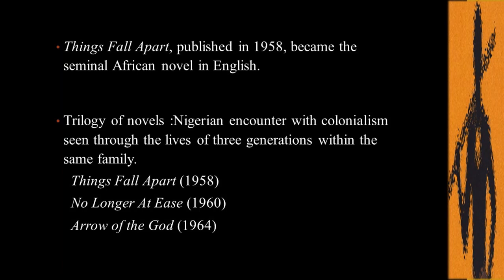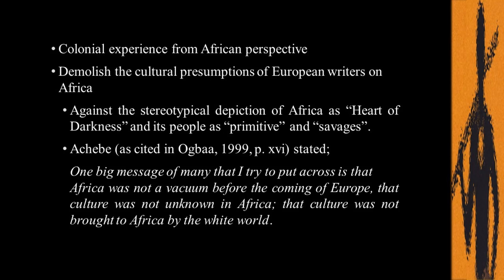This novel was first published in 1958 and was part of a trilogy. The second novel, No Longer at Ease, was published in 1960, and the third, titled Arrow of God, in 1964. They tell the story of three generations of the same family affected by colonialism. As Achebe's famous saying goes: 'If you don't like someone's story, write your own.' It was exactly what he did. The novel describes the colonial experience from an African perspective, counteracting the cultural and racial stereotypes created by Europeans.